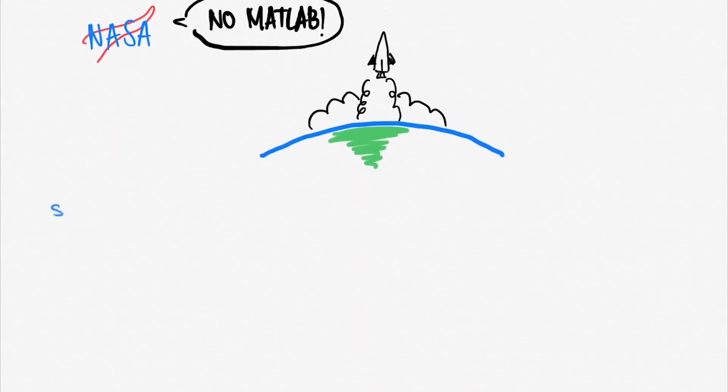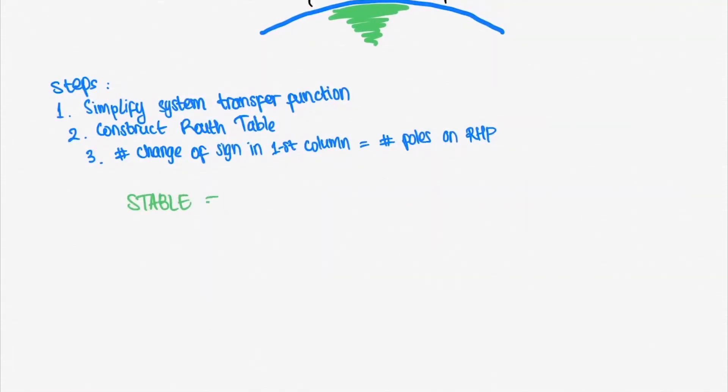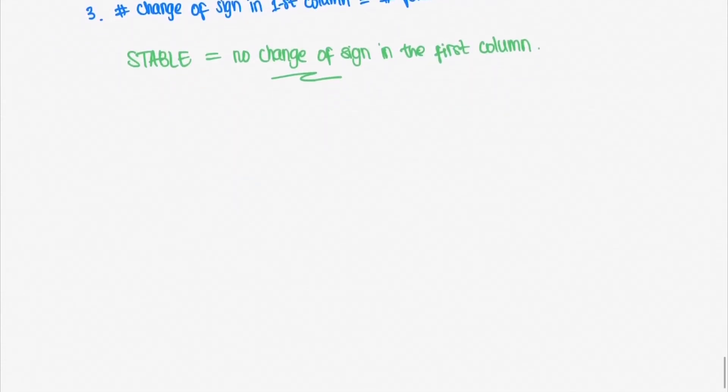Here's the first step. First is to find the simplified transfer function. Then construct the Routh's table out of the simplified transfer function. We only use the characteristic equation. From the Routh's table, you can count the number of changes of sign in the first column. That number is the number of poles in the right half plane. In other words, our system is said to be stable if there are no changes of sign in the first column of our Routh's table.